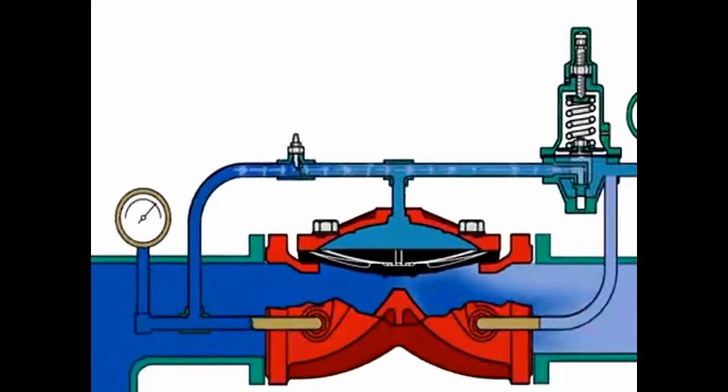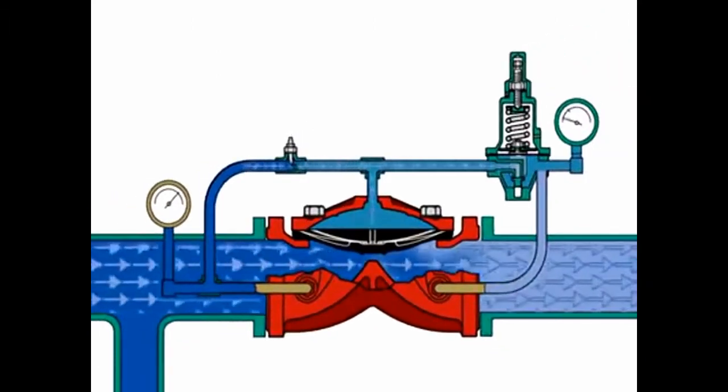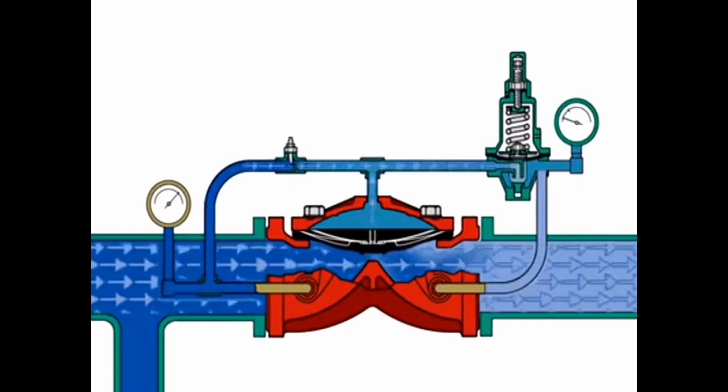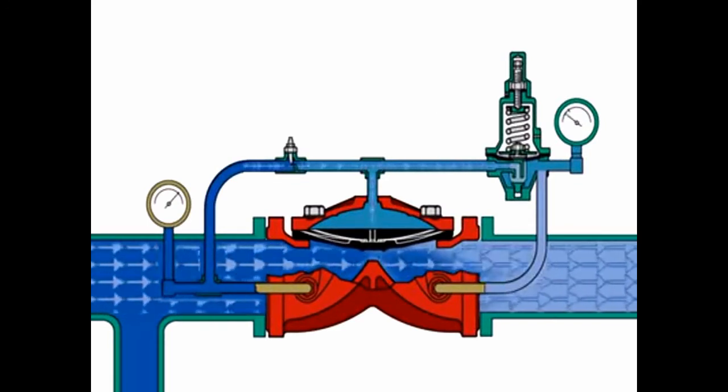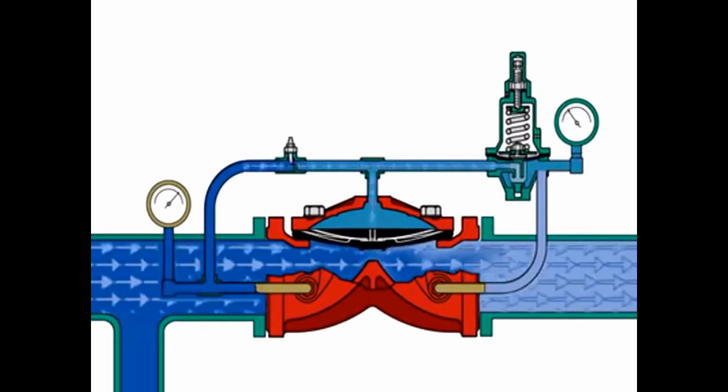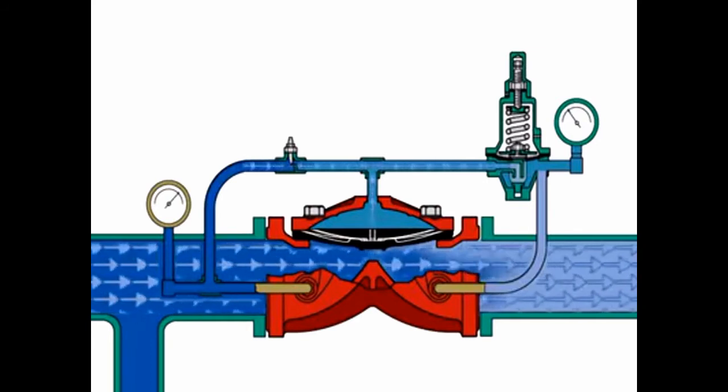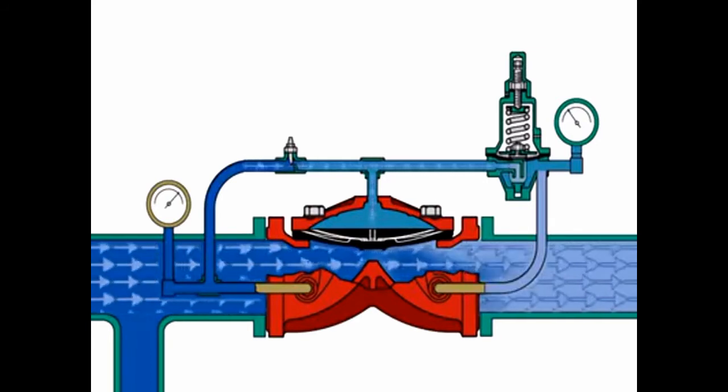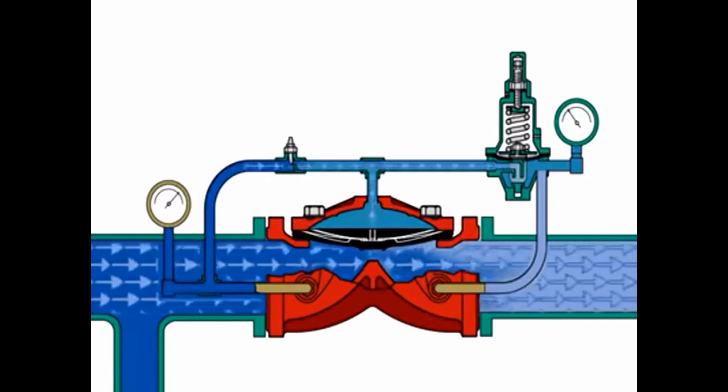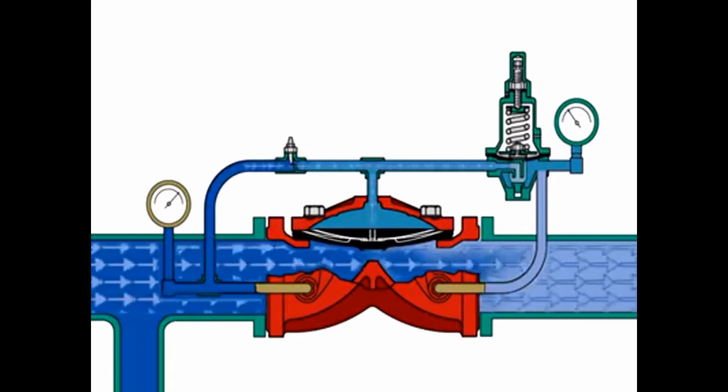Should the downstream pressure drop below the set pressure, the pilot valve will reopen to once again reduce pressure in the diaphragm chamber. The regulated flow through the pilot valve decreases or increases the pressure in the diaphragm chamber to sufficiently open or close the PRV1 as required to regulate the downstream set pressure.